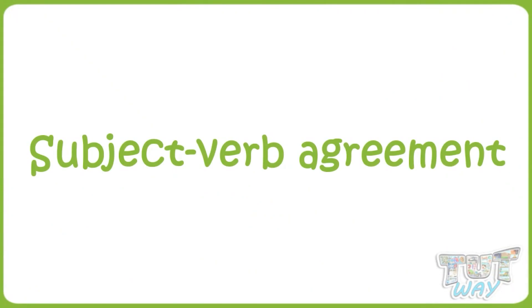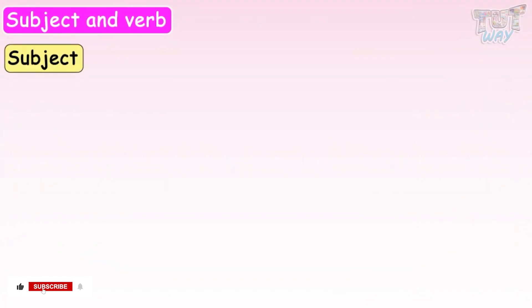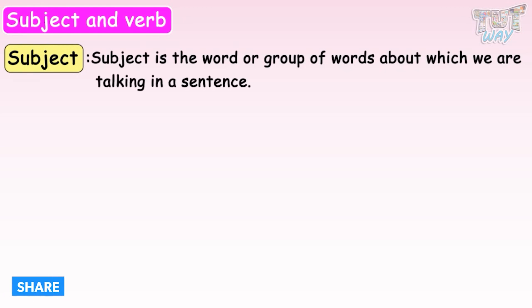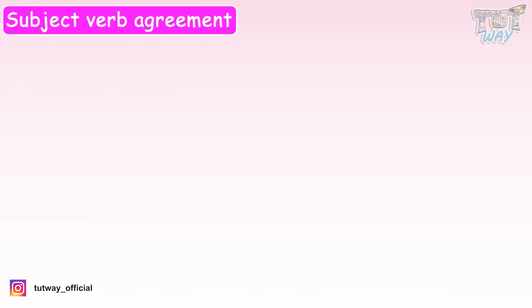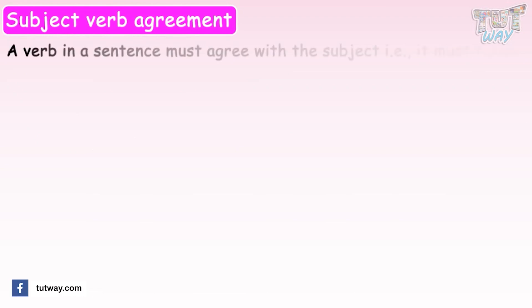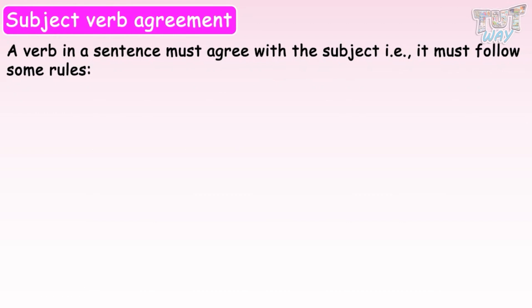Today's topic is subject-verb agreement. First of all, what is a subject? A subject is the word or group of words about which we are talking in a sentence. A verb is a word that tells about the action being performed or the state of being of the subject. A verb in a sentence must agree with the subject, following rules that we will learn with the help of examples.